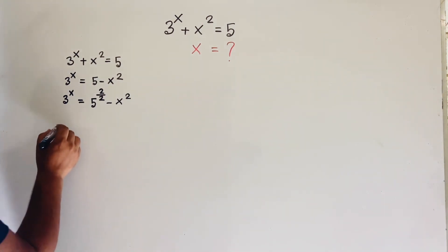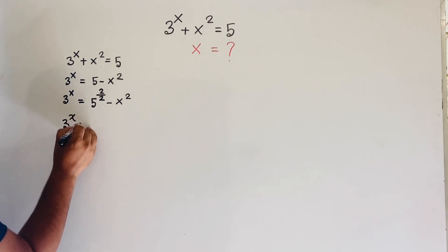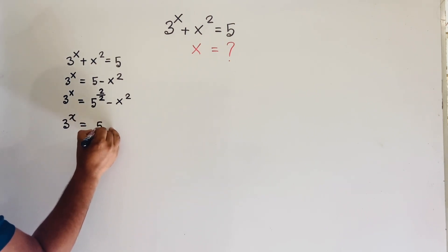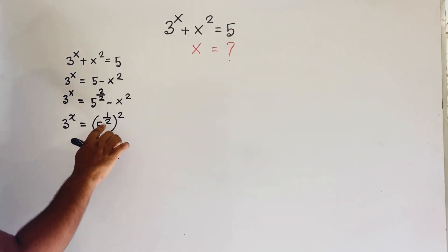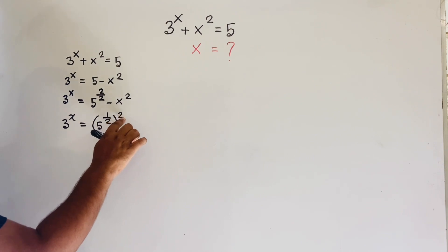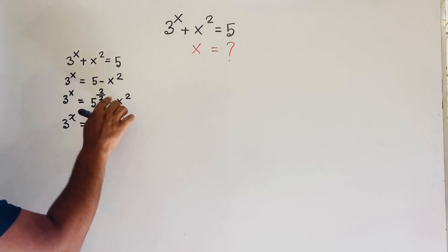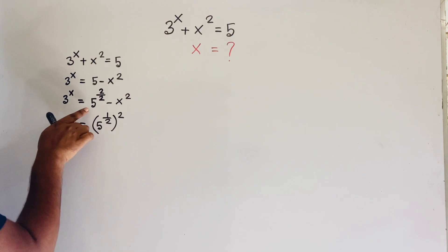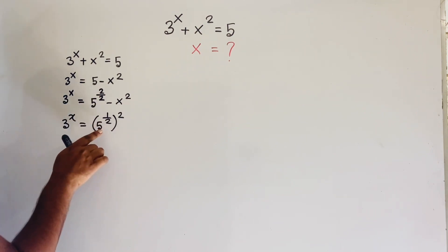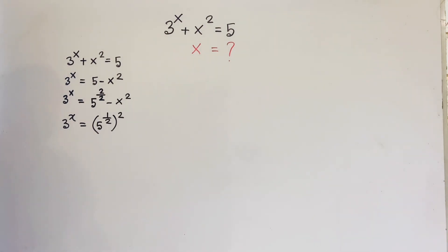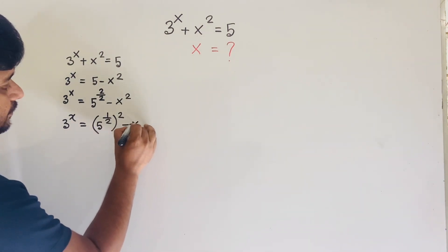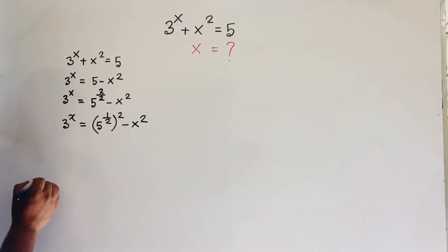At this moment I can rewrite: 3^x = 5^(1/2) whole to the power 2, minus x². We know that (a^n)^m = a^(nm), so 5^(2/2) becomes 5^(1/2) whole squared. So 3^x = (5^(1/2))² - x².